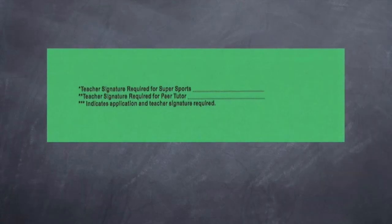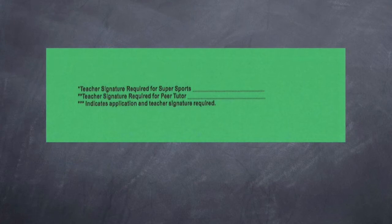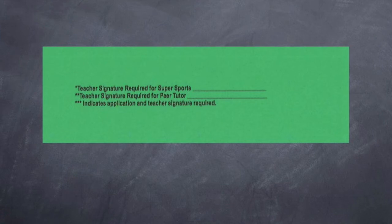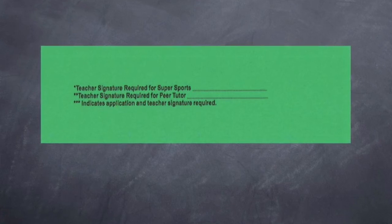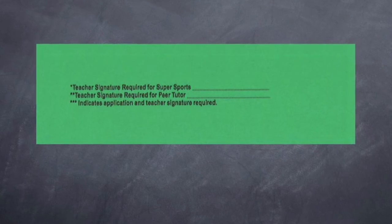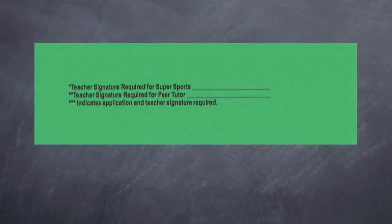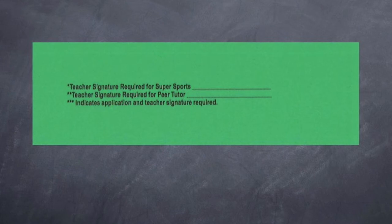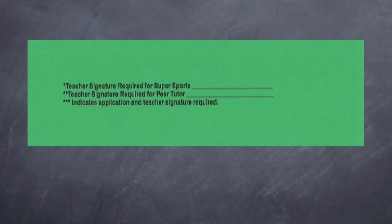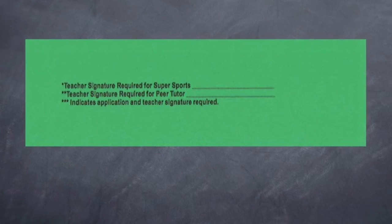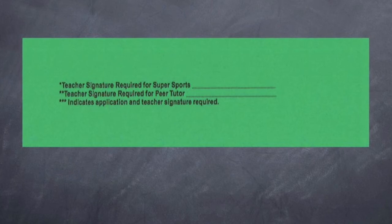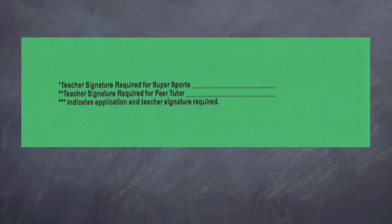Let's take a moment to look at the last few lines on the card where it says teacher signatures required. For super sports, you will need to see Mrs. Gore for a signature. For peer tutoring, you will need to see Mr. Ainsley for a signature. On the last line, it says application and a signature are required. This is true for video production, for which you should have already auditioned, office aid, Desert Shadows Elementary student aid, and for being a teacher aid. For these classes, you will need an application.